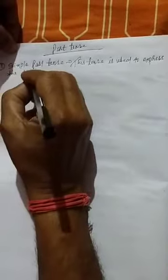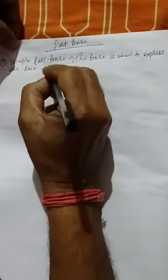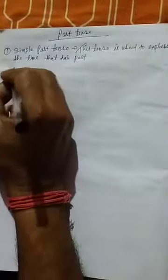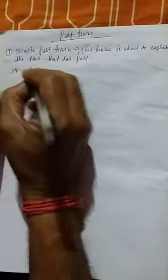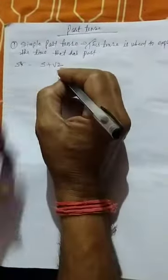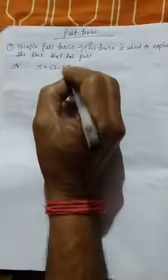This tense is used to express the time that has past. The structure of this tense is subject plus second form of the verb and object.